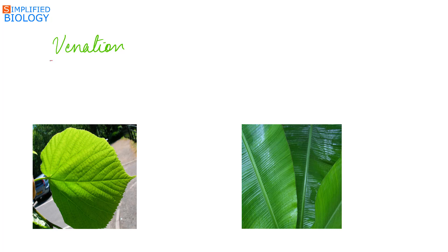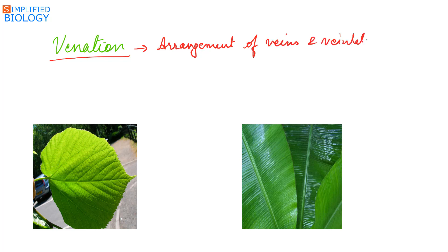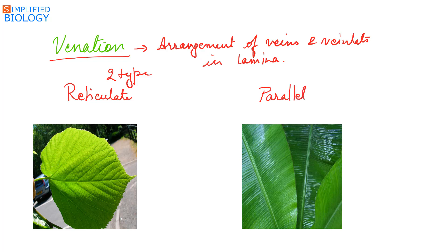Venation is the arrangement of veins and veinlets in the lamina. It is of two types: reticulate and parallel. In reticulate venation, the veins break up into smaller veinlets that form a reticulum or network throughout the leaf. This is seen in most dicots, and in some monocots like Smilax.